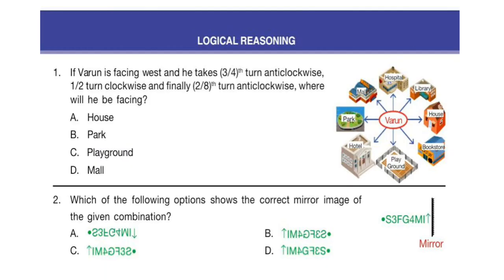Let's start with the first section: Logical Reasoning. Question 1. If Varun is facing west and he takes a 3-fourth turn anti-clockwise, a half turn clockwise, and finally 2-eighth turn anti-clockwise, where will he be facing?